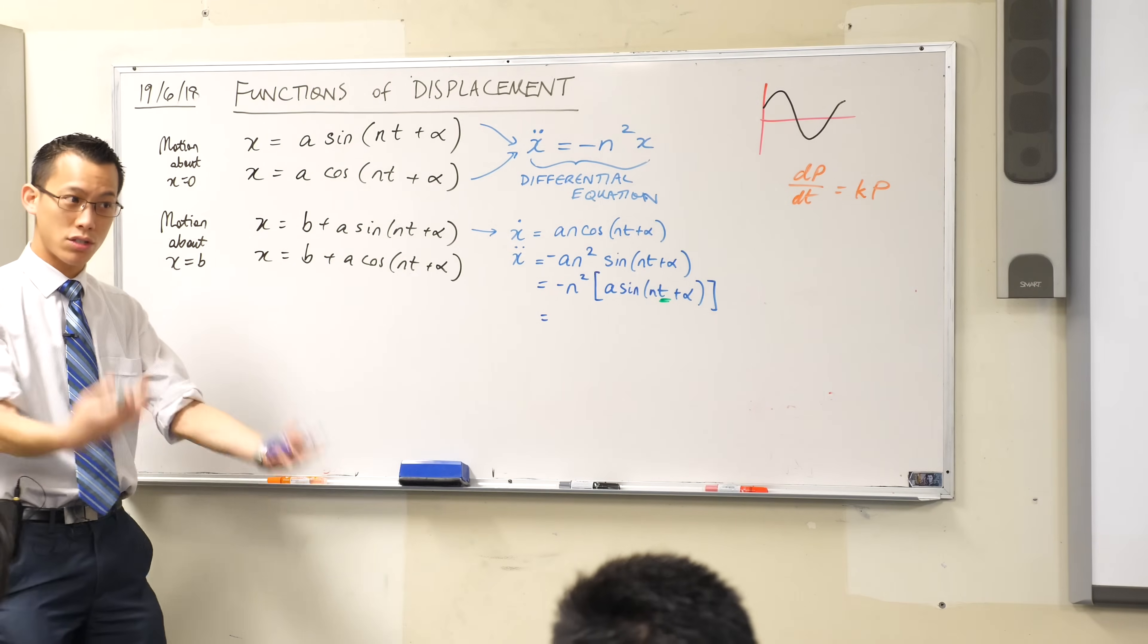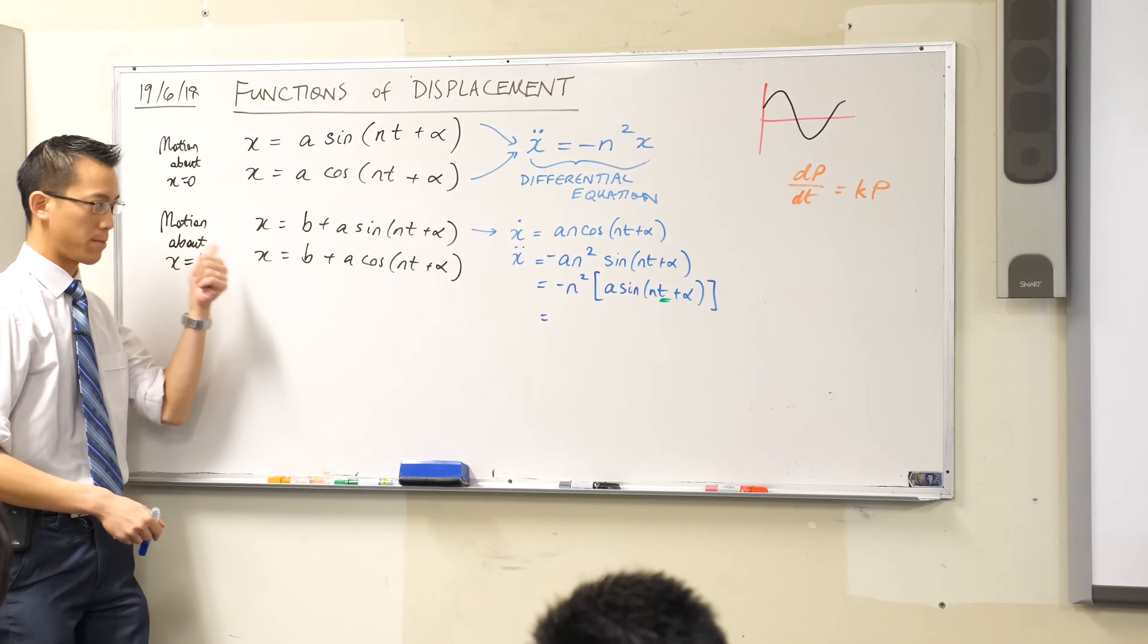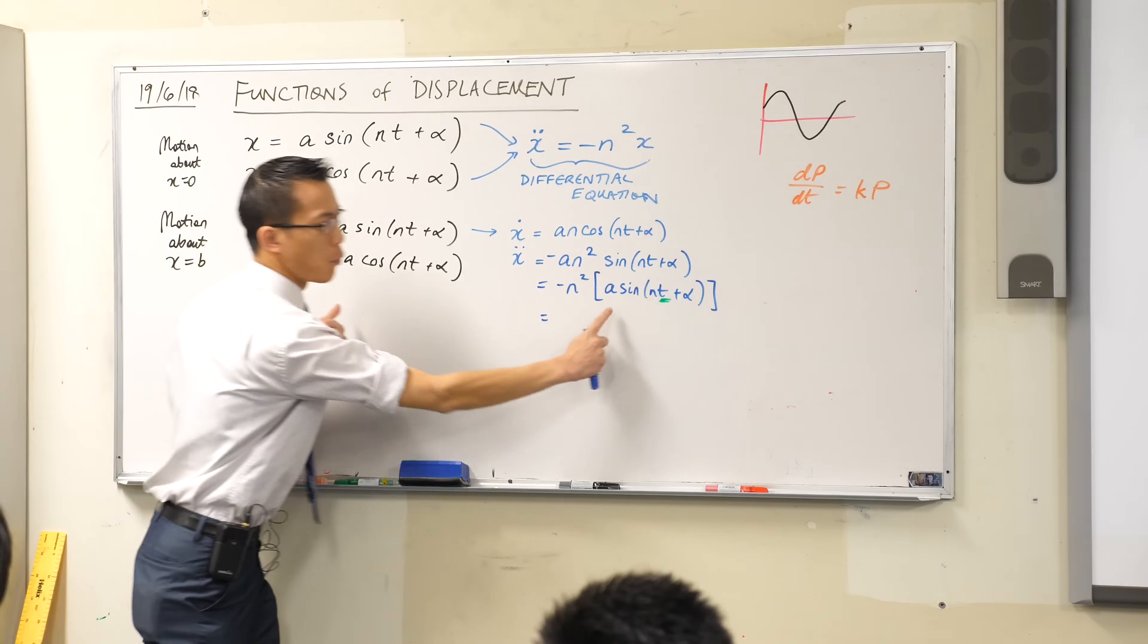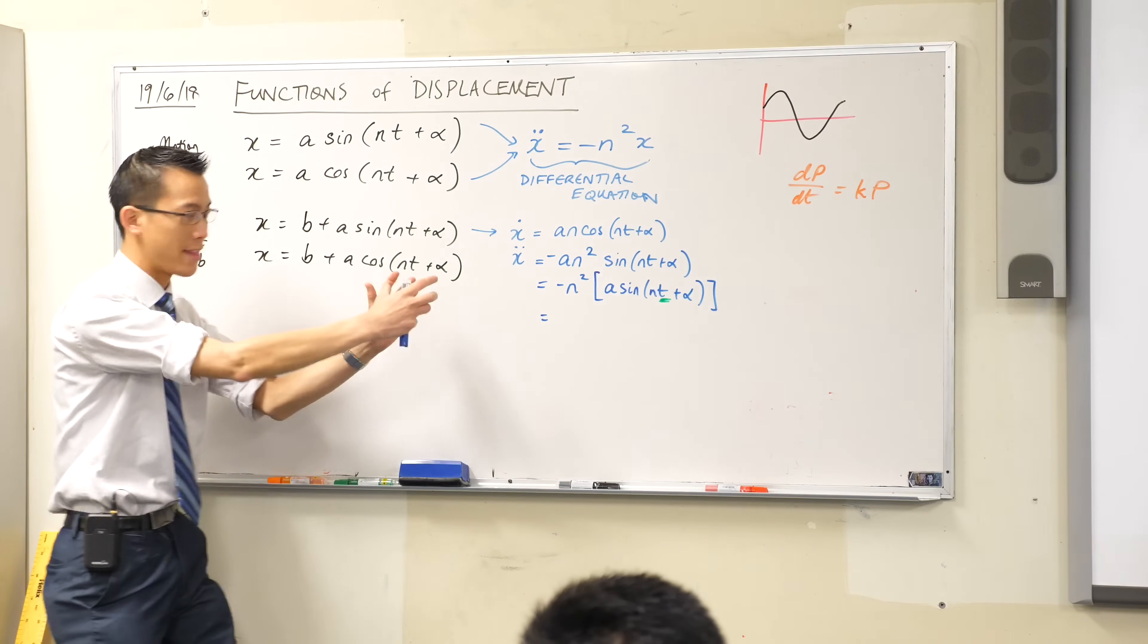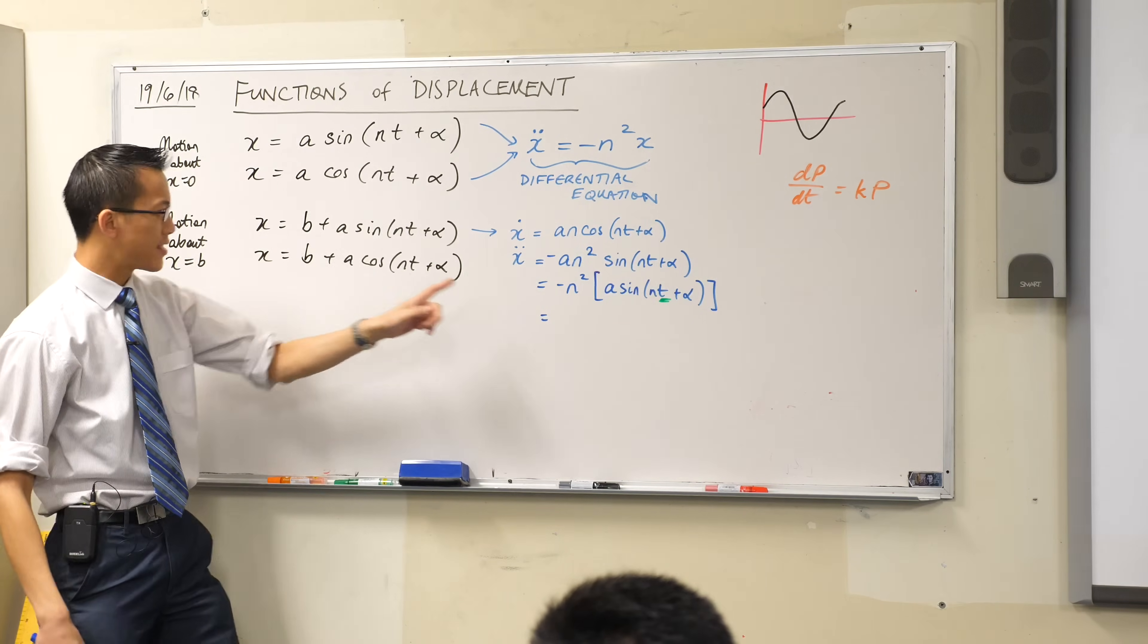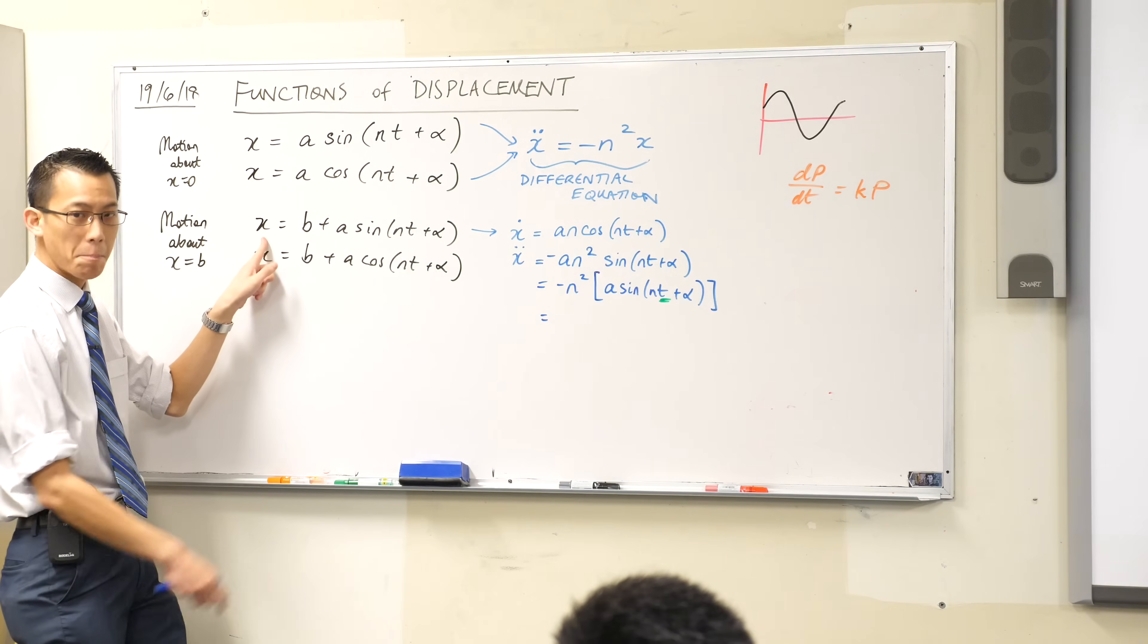So this is still as a function of time, but I can restate this in terms of the displacement by noticing that what I have here inside my square brackets, I've just put it in square brackets for the specific purpose of sort of highlighting it. It's not quite x, is it? It's not quite x. It's actually x minus b.